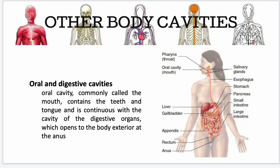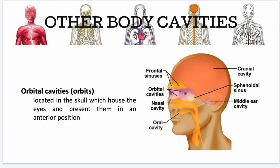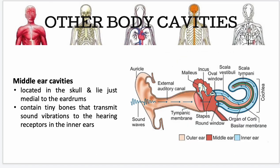Next are the oral and digestive cavities. Your oral cavity, commonly called the mouth, contains your teeth and tongue and is continuous with the cavity of the digestive organs, which opens to the body exterior at the anus. Your nasal cavity is part of the respiratory system and is located within and posterior to your nose. Your orbital cavity is located in the skull and houses your eyes in an anterior position. Your middle ear cavity, also in the skull, lies medial to your eardrums and contains tiny bones that transmit sound vibrations to the hearing receptors in your inner ear.